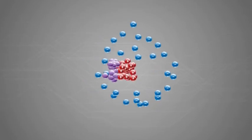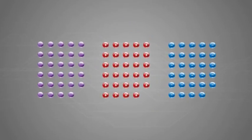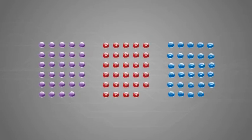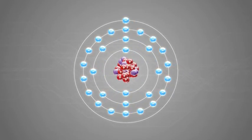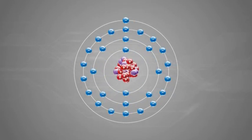If we could pull an atom apart into its components, we would see that a neutrally charged atom has the same number of electrons as protons. It is this force of attraction, or electrostatic force, between the positive and negative charges that prevents the electrons from escaping.